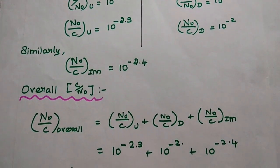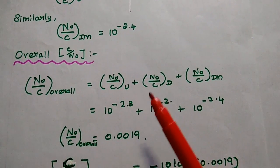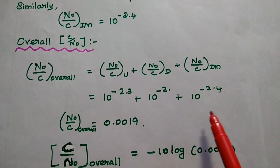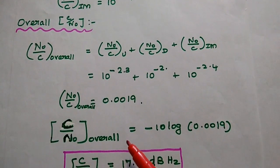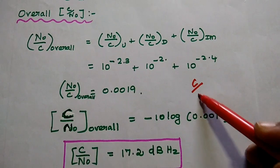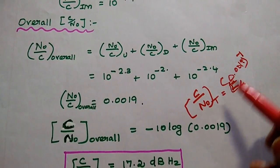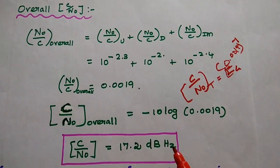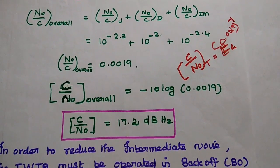We add all three N/C values to get the overall noise-to-carrier power: N/C_total = 10^(−2.3) + 10^(−2) + 10^(−2.4) = 0.0019. Taking the inverse gives C/N_total = (0.0019)^(−1). Converting to dB: −10·log(0.0019) = 17.2 dBHz. This is the overall carrier-to-noise spectral density.